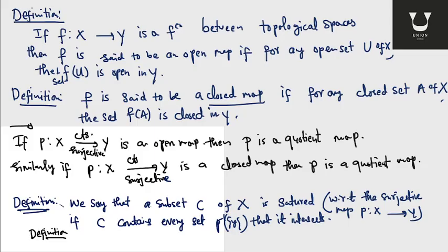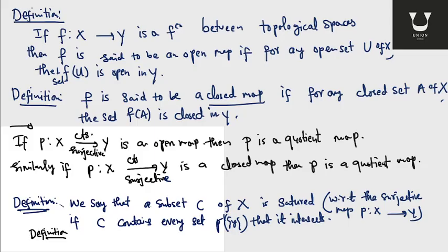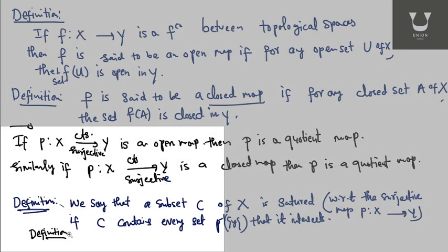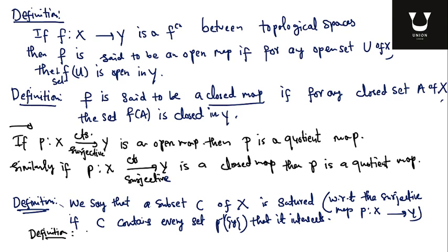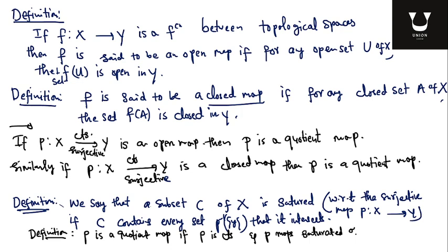Using the definition of saturated sets, another equivalent definition of quotient map is: p is a quotient map if p is continuous and p maps saturated open sets of x to open sets of y. Equivalently, p is a quotient map if p maps saturated closed sets of x to closed sets of y.